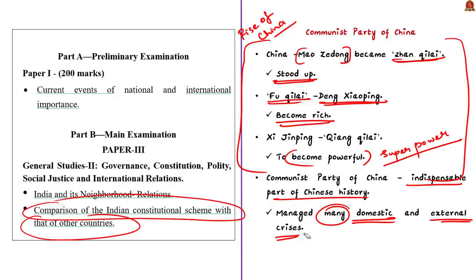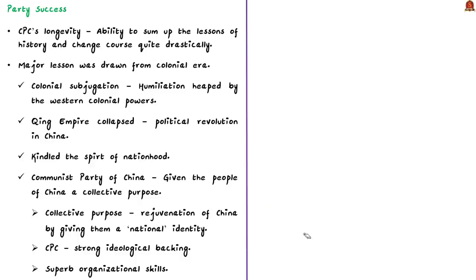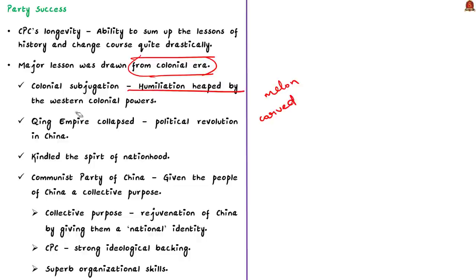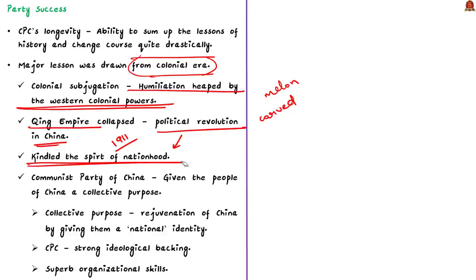How did the party survive for so long? The party's longevity is mainly because of its ability to sum up the lessons of history and to change course drastically whenever required. The first major lesson was drawn from the colonial era — China was 'carved up like a melon,' meaning it was split into many parts because of colonial subjugation, seen as a humiliation by Western colonial powers. When the Qing Empire collapsed in 1911, it brought about a political revolution in China and kindled the spirit of nationhood.